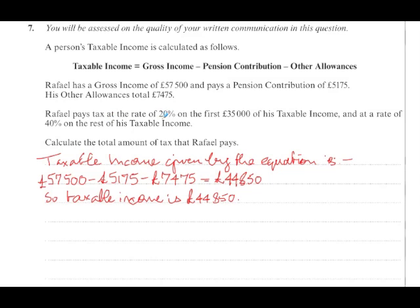He pays 20% on the first £35,000. His taxable income is greater than £35,000, so he'll pay tax on the full £35,000. If he'd earned only £26,000 of taxable income, then you'd only calculate 20% on £26,000. But in this case he's got more than £35,000.